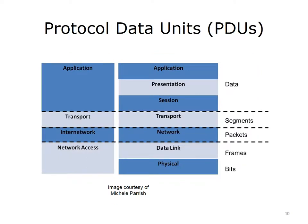As data travels through the layers, it is referred to with different names. This is known as the protocol data units, PDUs. As data travels through the application, presentation, and session layers, it is called data. At the transport layer, it is called segments. At the network layer, packets. As it passes through the data link layer, it is called frames. And finally, when it reaches the physical layer, it is called bits.